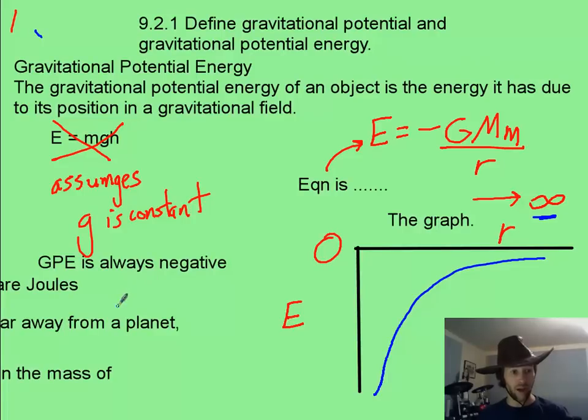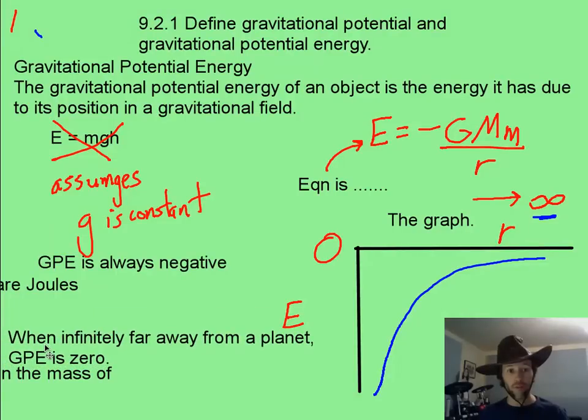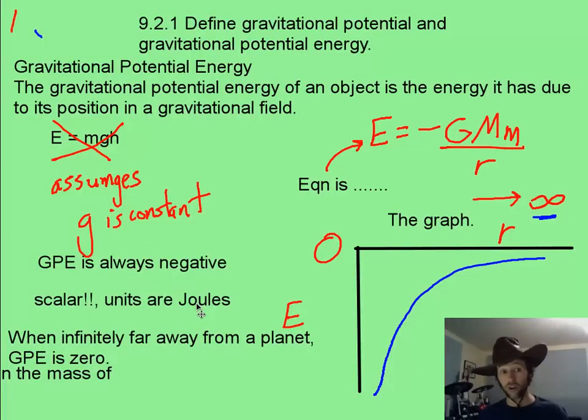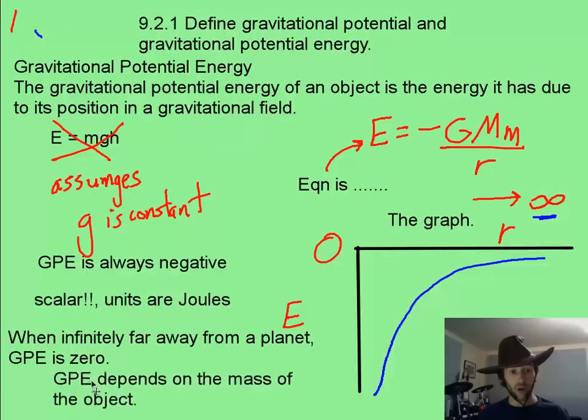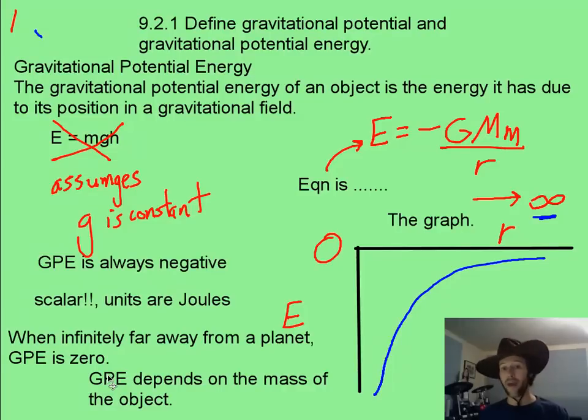And so, what you have to also know is that if something is infinitely far from a planet, it is going to have a GPE of zero. If you fill in infinity for this bottom number, your gravitational potential energy is zero. And you also want to know that, like all energy, this is a scalar. And also, like all energy, the units are joules. And also, much like the GPE that you know of, it depends on the mass. Small objects will have one GPE. More massive objects will have more energy, because as they fall, they can generate more kinetic energy.